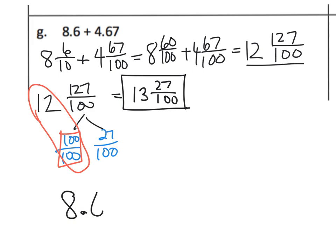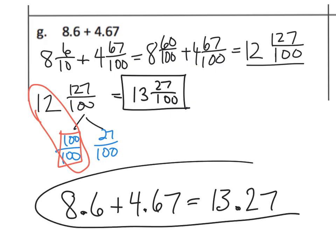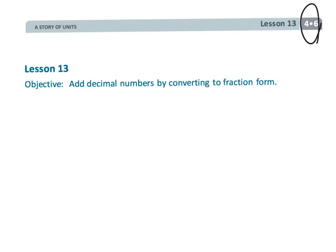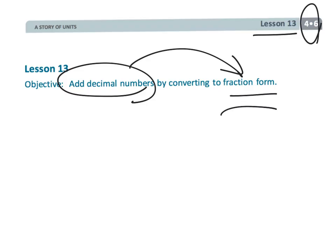Writing the answer as a decimal: eight point six plus four point six seven equals thirteen and twenty-seven hundredths, and we can see that thirteen point two seven is the same thing as thirteen and twenty-seven hundredths. Parents and teachers, don't be alarmed — this is not the standard algorithm yet. At this point we're still trying to develop in our students a deep understanding of place value and of fraction and decimal equivalents. This is just a stepping stone toward adding using the standard algorithm. That wraps up fourth grade module 6 lesson 13, adding decimals by converting those decimals into fraction form.